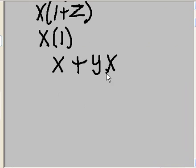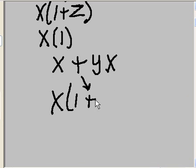And let's... x is in both of these terms. Let's factor it out. x times what gives me x? One. Bring down the OR. x times what gives me yx? Y.